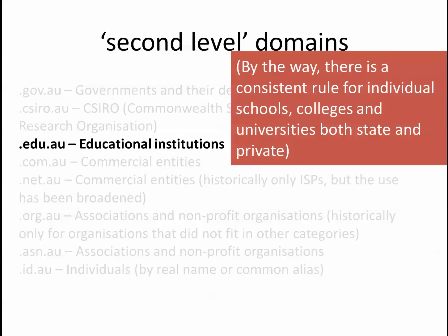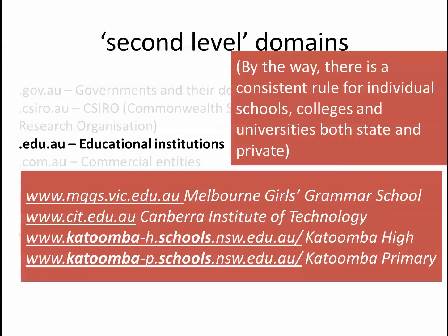Each individual school has their own website, so you can tell by looking at the URL whether it came from Katoomba High or Katoomba Primary. Melbourne Girls Grammar and different universities will have their different spaces. CIT is .edu.au — I was a little surprised when I first came here that it wasn't .act.edu.au. But those are the standard protocols; I can tell at a glance that something is a Victorian grammar school, even if it's a private school.